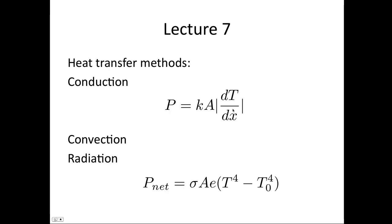In lecture 7, we looked at heat transfer methods. We said there was conduction. The formula for conduction, P, which is Q over t, equals the thermal conductivity times the area over which the heat was being conducted, the surface area, over the change in temperature, the temperature difference between the two sides of the object through which the heat is being conducted, times the thickness of the object, dx is the thickness.